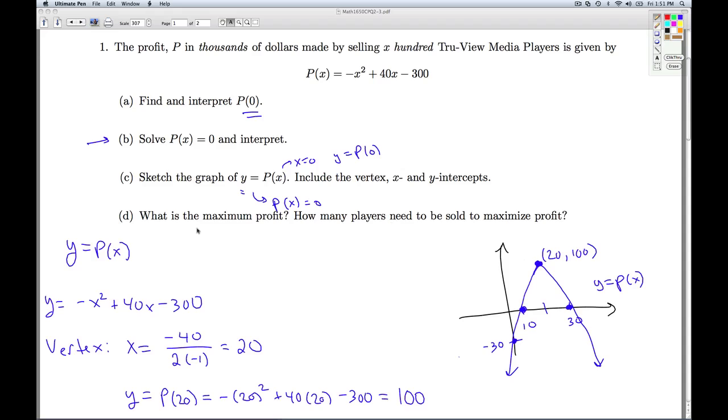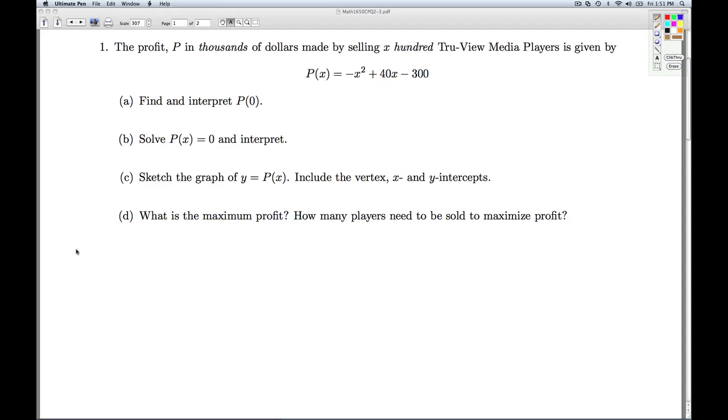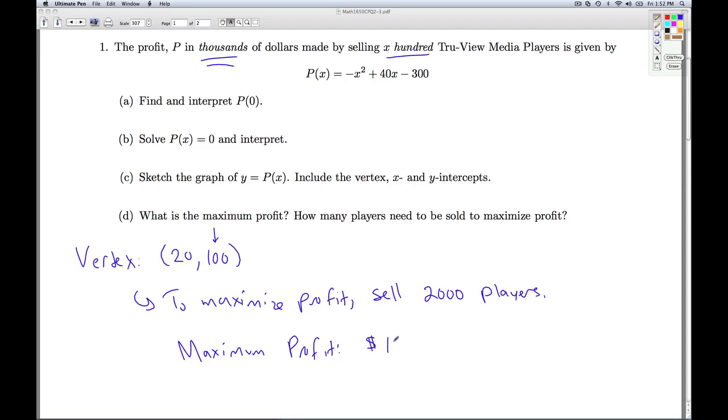Now, of course, from a business point of view, we want to know what's the maximum profit and how many players need to be sold to maximize the profit. Well, the maximum is going to happen right there at the vertex. The vertex we found to be at 20,100, and it was a maximum. So to maximize profit, we need to sell x equals 20 corresponding to 20,100 or 2,000 players. And what's the maximum profit going to be? Well, that's going to be the y value. That's $100,000. So that'll do it for number one.